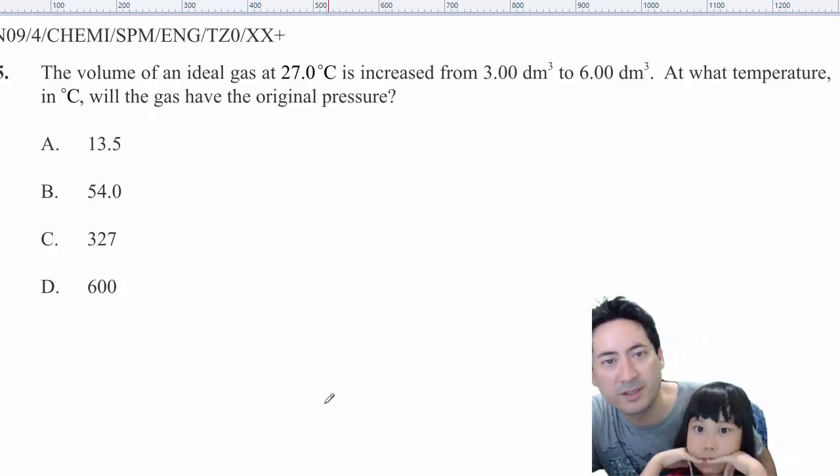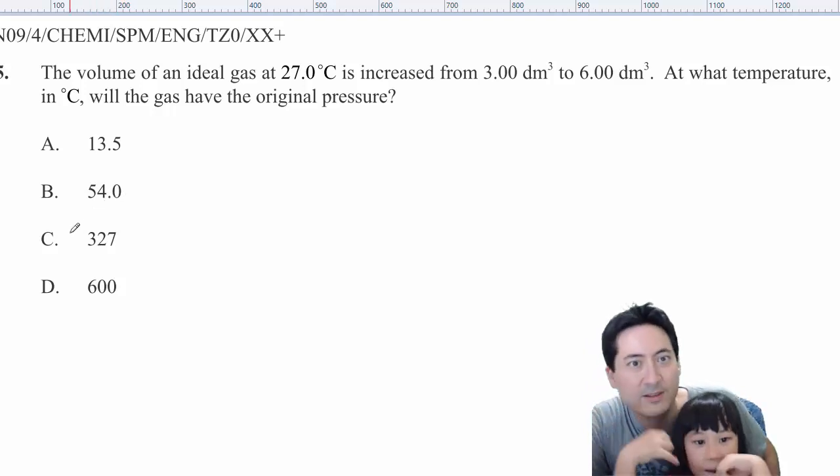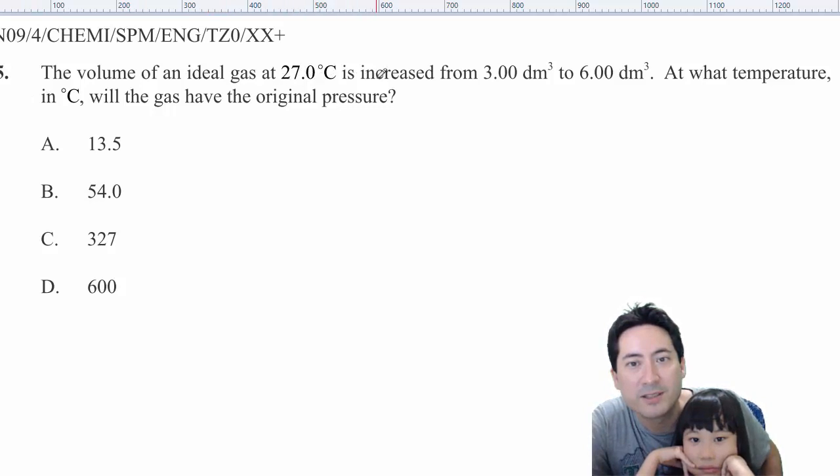Alright, Madeline, this is the problem. You sure you want me to go through this problem? You sure? You think you'll understand? Alright, the volume of an ideal gas at 27 degrees Celsius increased from 3 to 6. At what temperature in degrees Celsius will the gas have the original pressure?